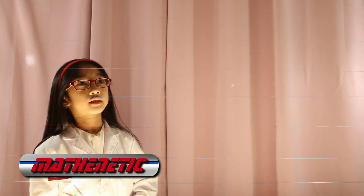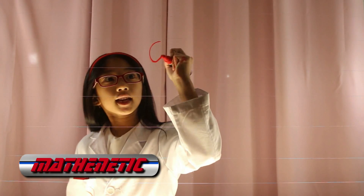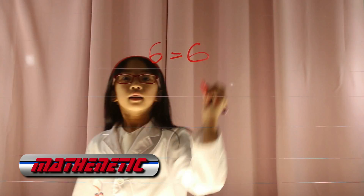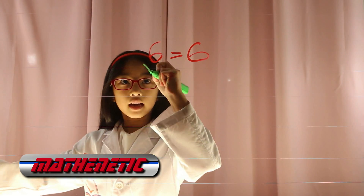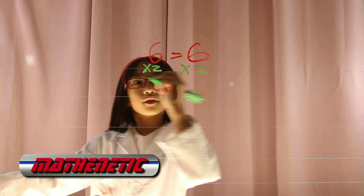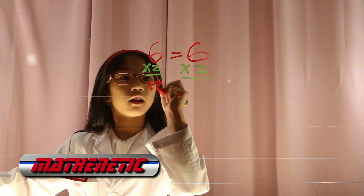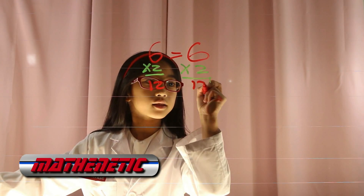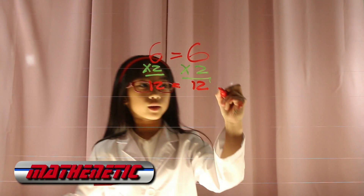I will prove to you why you have to multiply on one side and the other side. Say you have 6 equals 6. You want to multiply by 2 on one side; you also have to multiply by 2 on the other side. 6 times 2 is 12, and 6 times 2 is also 12. 12 equals 12.